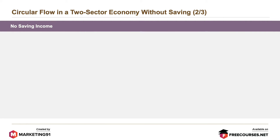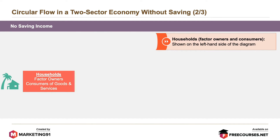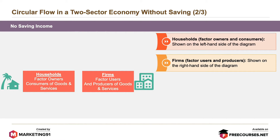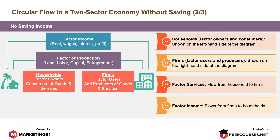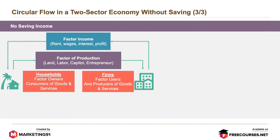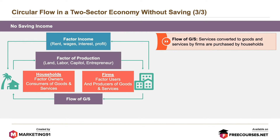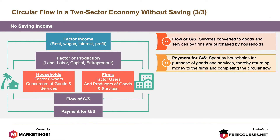Elements in this circular flow are: households — factor owners and consumers — shown on the left side of the diagram; and firms — factor users and producers — shown on the right-hand side of the diagram. Factor services flow from households to firms, and factor income flows from firms to households. The flow of goods and services: services converted to goods and services by firms are purchased by households. Payment for goods and services is spent by households for the purchase of goods and services, thereby returning money to the firms and completing the circular flow.